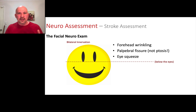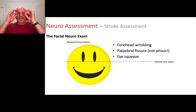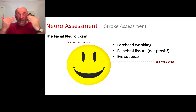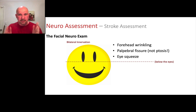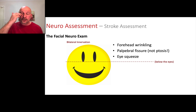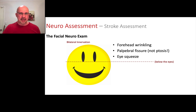Someone with exophthalmos from thyroid problems has big, buggy eyes, and other people will have more closed eyes. There's a lot of variety in how much PF people normally have, so usually we just look to see that they're the same on both sides. To recap the top part: we look for forehead wrinkling, the palpebral fissure, and we do the eye squeeze test — have them squeeze their eyes and push up against your fingers.